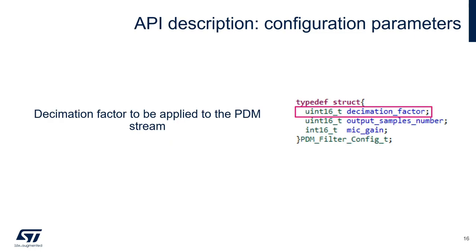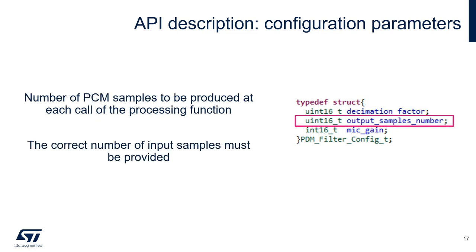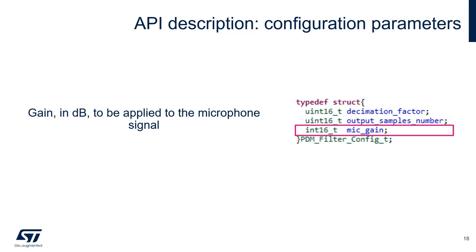The main parameters are the decimation factor, which is the actual decimation factor to be applied to the PDM stream. The output samples number, which is the number of PCM samples to be produced at each call of the processing function. The correct number of input samples must be provided in the PDM buffer to avoid buffer overflows while reading the input data. MicGain is the gain in decibels to be applied to the microphone signal.